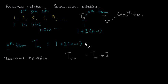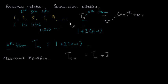These two formulae — for the nth term and the recurrence relation — only work for this particular sequence. If I have another sequence with different numbers and a different pattern, then these formulae would be different, depending on the actual sequence. But the idea of finding an nth term formula and a recurrence relation can still apply, even if the actual formulae are different.